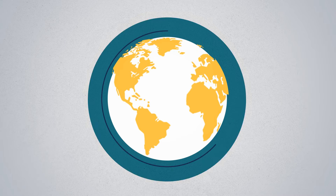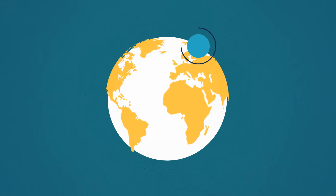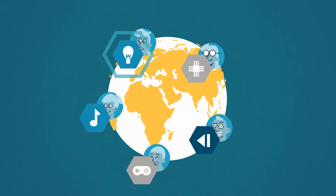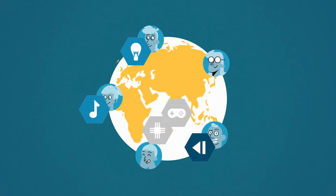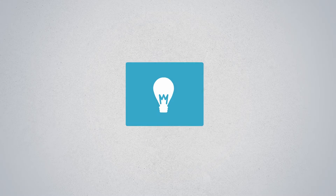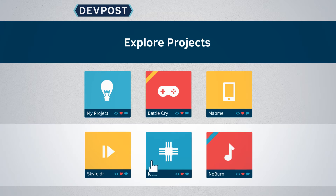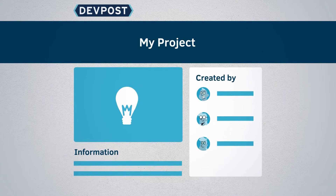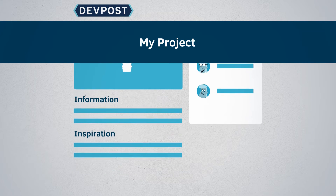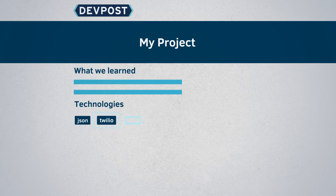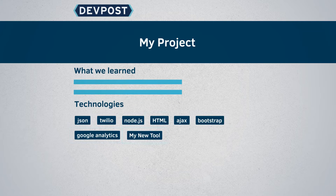DevPost is a global community where software developers share their projects to inspire and learn from each other. A project on DevPost tells the story behind the code, including what inspired it, how it works, what the team learned, and the technologies in the stack.